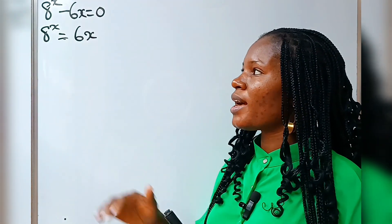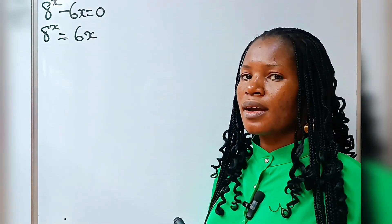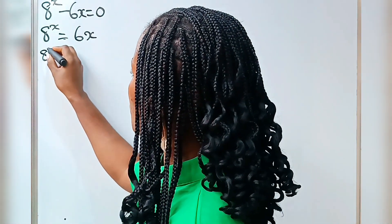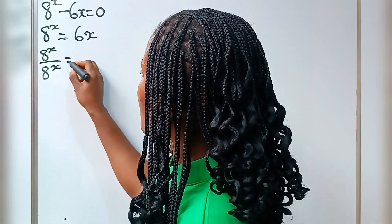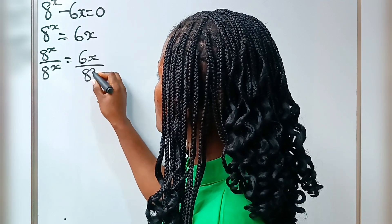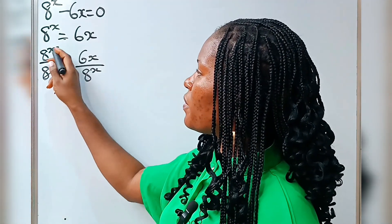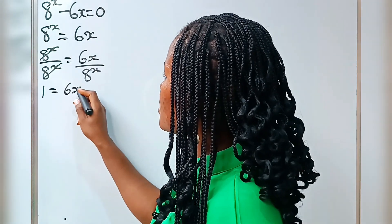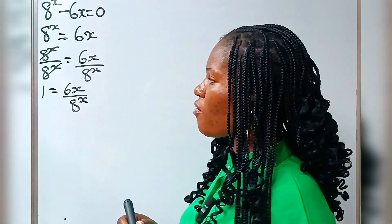Now let's divide both sides of this equation by 8 to the power of x. So we have 8 to the power of x divided by 8 to the power of x is equal to 6x divided by 8 to the power of x. This will divide itself — we have 1 is equal to 6x divided by 8 to the power of x.